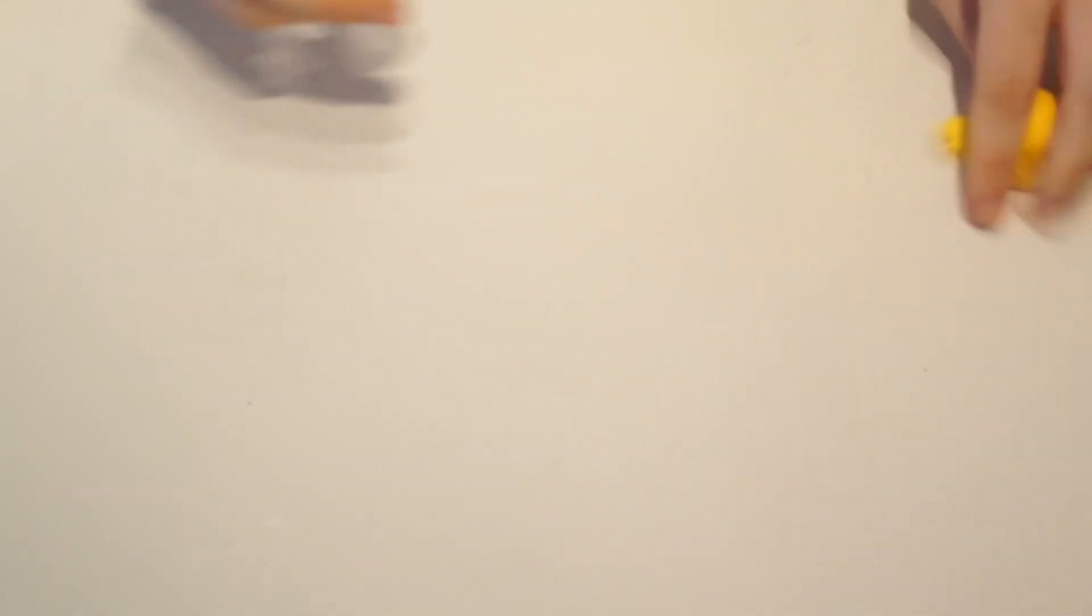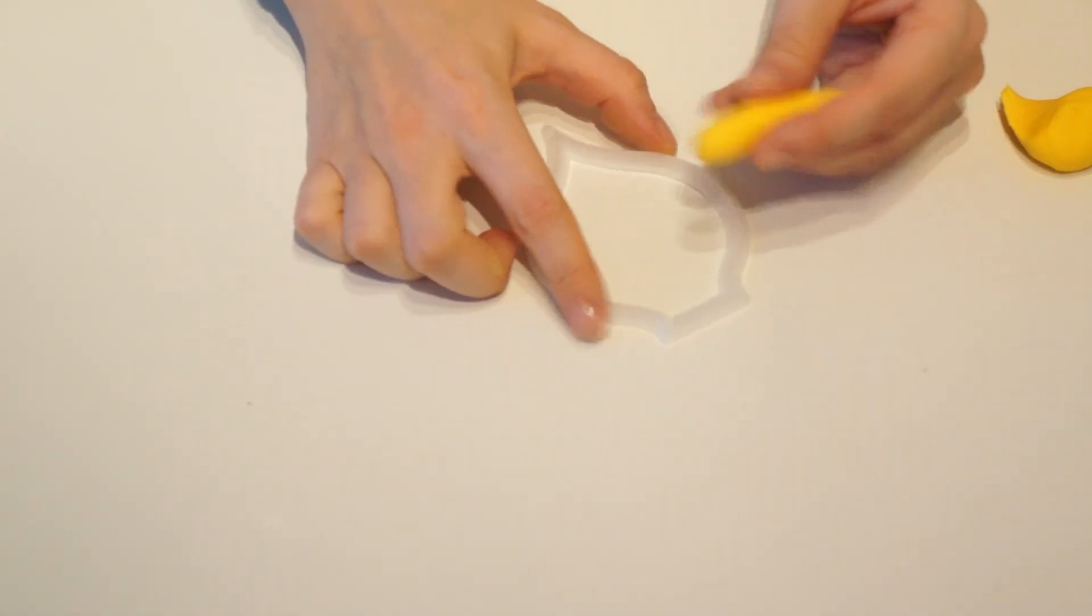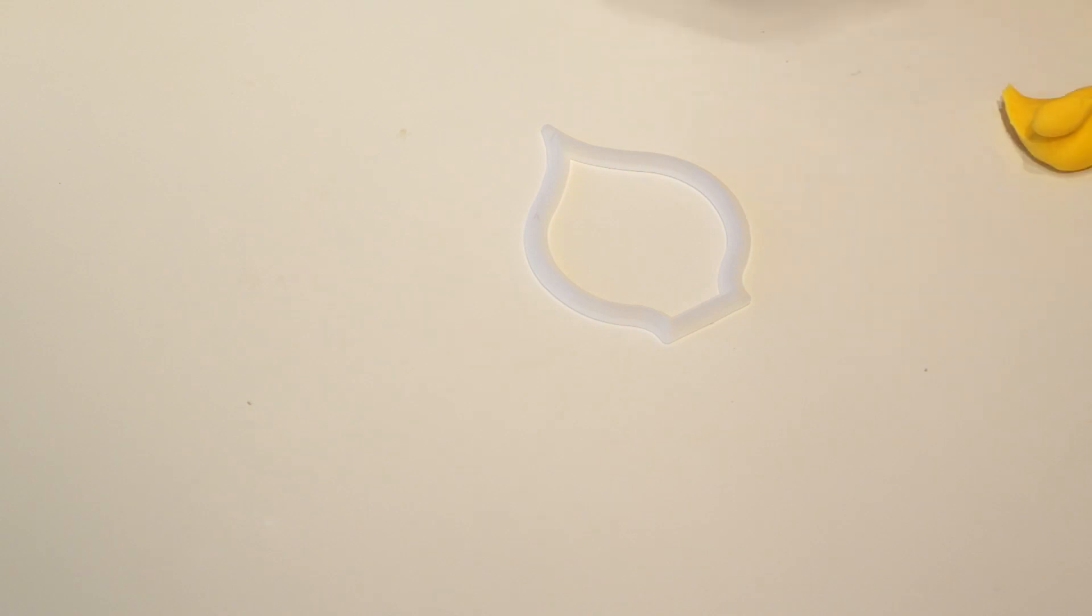What we're going to do is start with the center of the flower. I'm going to take some of the yellow. What you want to do is take your cutter and you want the center of the flower to come up about a third of the cutter. We're going to roll it so it's slightly fatter at the bottom and comes into a slight point at the top.